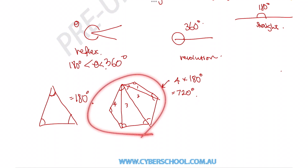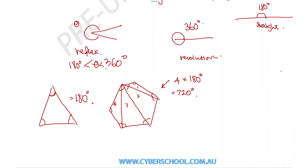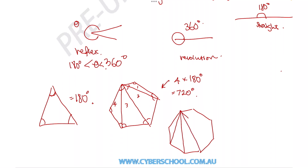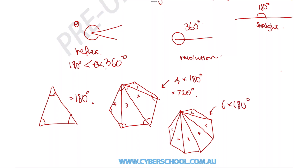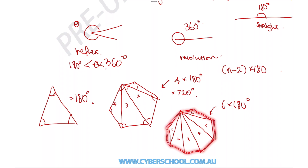You'll notice that whenever you apply this technique to any shape, the number of triangles you can make is always 2 less than the number of sides. For an octagon, dividing it into triangles from one corner to each diagonal gives us 6 triangles. So the angle sum of an octagon is 6 times 180. The angle sum of any shape can be found by the formula (n − 2) × 180, where n is the number of sides.